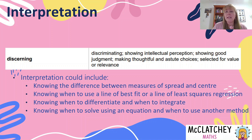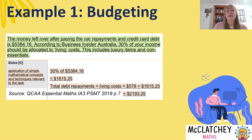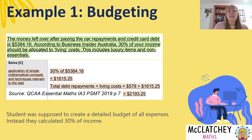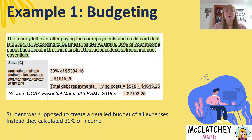Let's look at some student examples. This comes from the QCAA Essential Maths syllabus — a budgeting assignment for the 2019 PSMT. This one has been deemed a simplistic application because students were supposed to provide a very detailed budget, but all they did was find 30% of someone's income and say that will cover all expenses. That is a simplistic application when the task requires so much more. They've come up with a budget, but they haven't done any of the actual work for it.